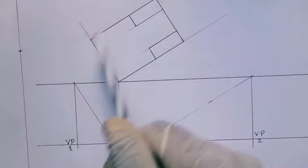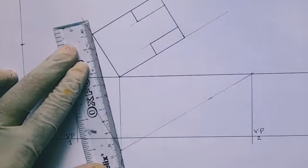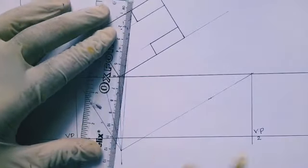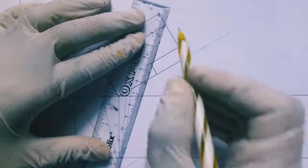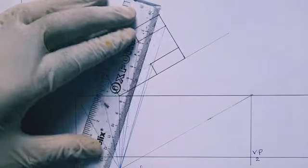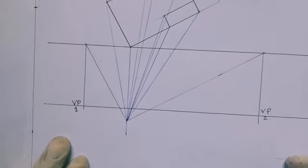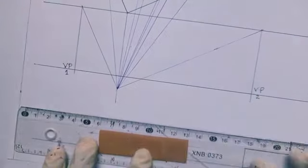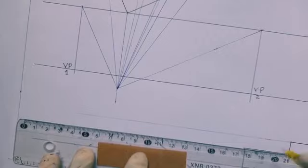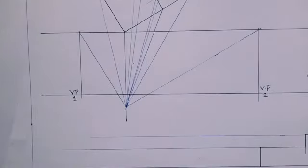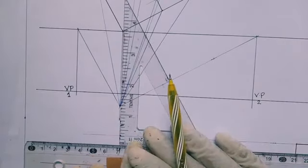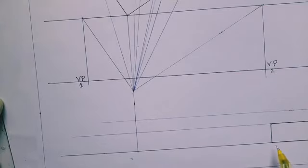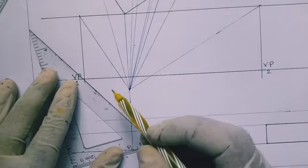Now we draw lines from all the corners of the plan to the station point. The observer is seeing every part of the object at those corners. Those lines cross the picture plane at points we refer to as piercing points. The first corner on the picture plane gives us the top point and the point below on the ground. We can now project from those points to the vanishing points.